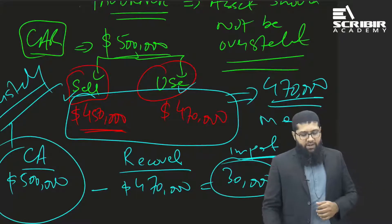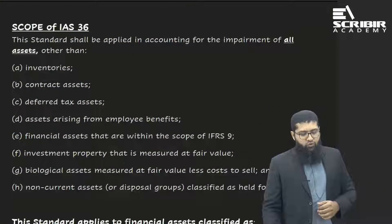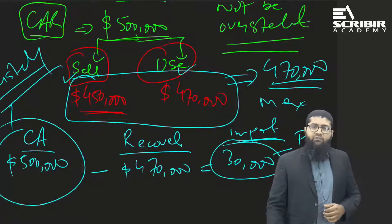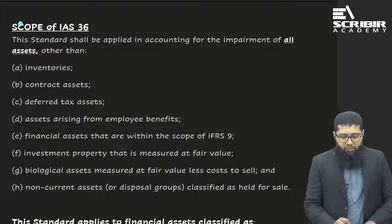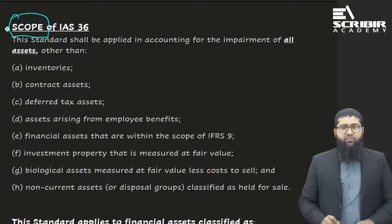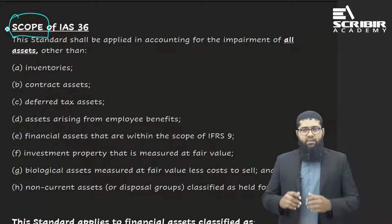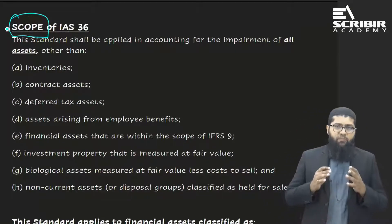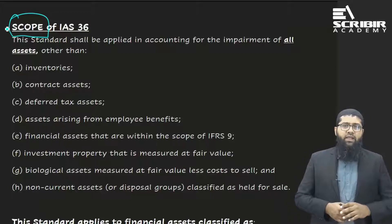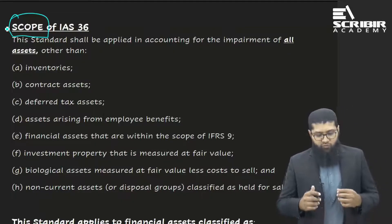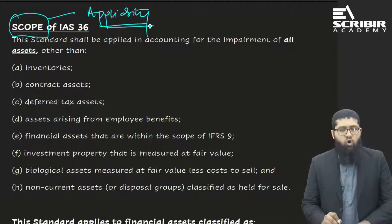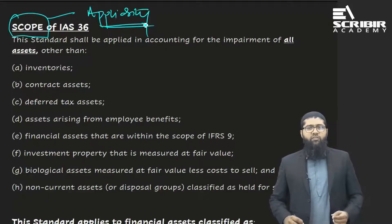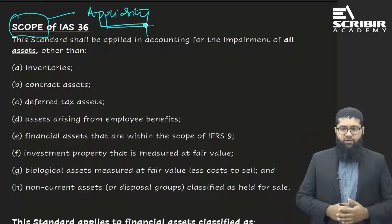With respect to every single accounting standard there is a very important principle called the concept of scope. The scope means the applicability of the accounting standard — to what assets, to what liabilities, to what items is this accounting standard applicable.